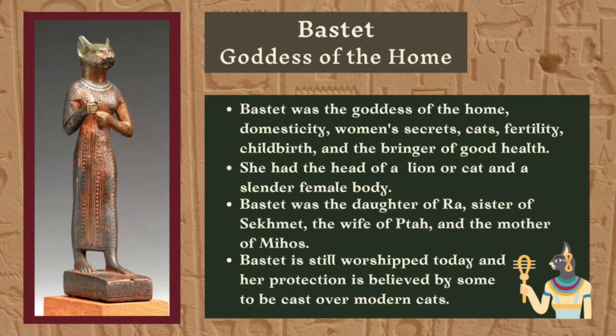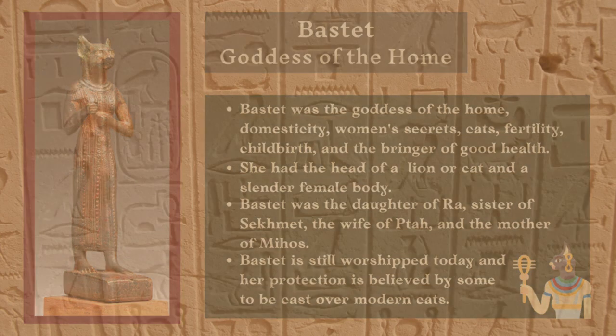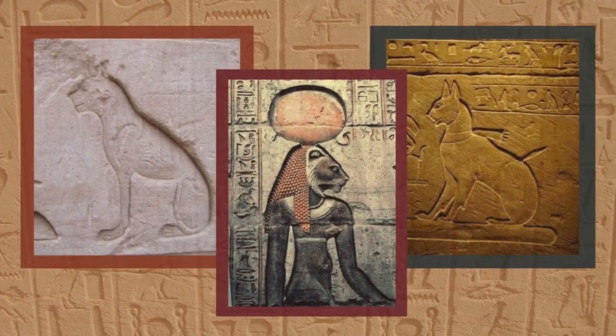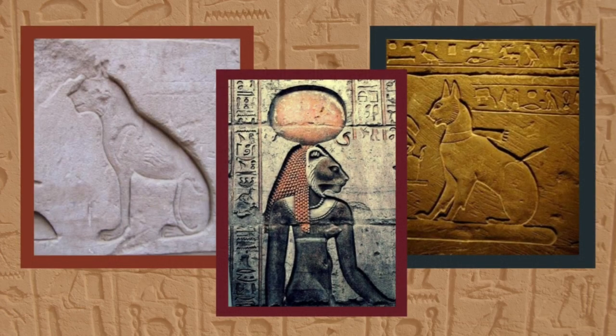Bastet was the daughter of Ra, sister of Sekhmet, the wife of Patar, and the mother of Mihoz. Bastet is still worshipped today, and her protection is believed by some to be cast over modern cats. Bastet's name is translated to 'she of the ointment jar,' and for this reason she was often depicted bearing a jar adorned with cats.